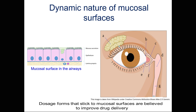Mucus moves by cilia beating and the function of this mucus is to trap particles. When we breathe air, we basically have particles of dust, particles of bacteria and viruses and other particles. They get trapped by the mucus and moved by the process of mucociliary clearance, which means that these particles are eliminated from the airways and go to our stomach where they are neutralized by the acidity in the stomach.